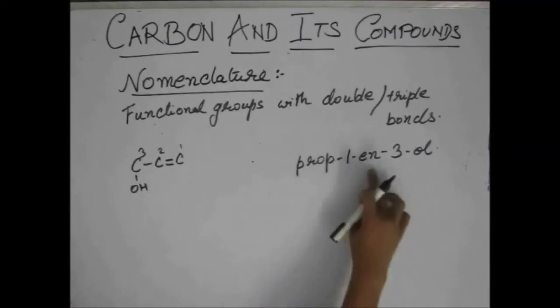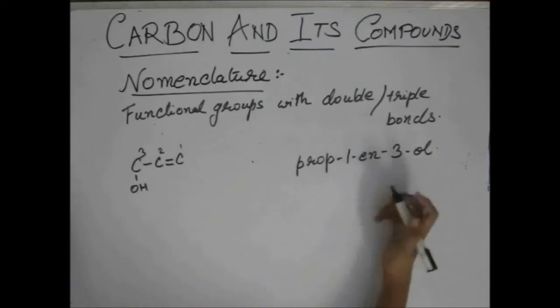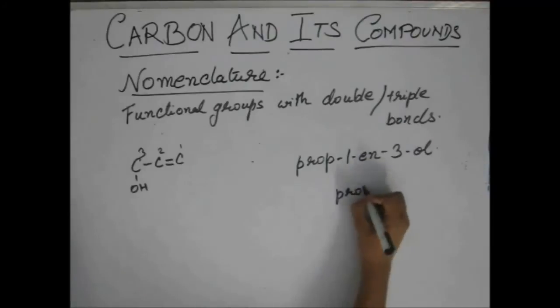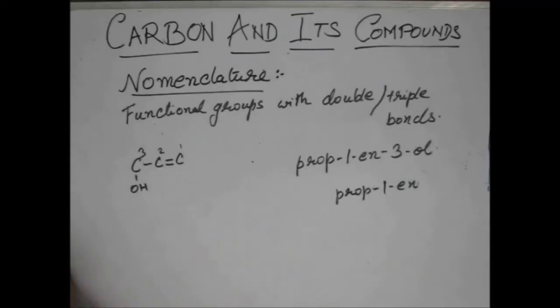We have prop-1-in-3-ol. See, this will be prop-1 and it would have been prop-1-ine but due to this functional group, we delete this e and add the suffix, but here the alcohol is at position number 3. So, we have to add this 3 along with the alcohol. So, the name is prop-1-in-3-ol.